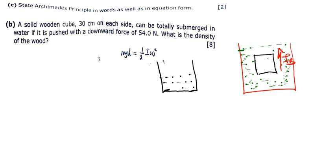When you put an object inside the water, that object is going to experience what we call the buoyant force. That buoyant force is always equal in magnitude to the force of gravity. The force of gravity is the force that the object is exerting on the water — that is mg. So the buoyant force is equal to mass times g.